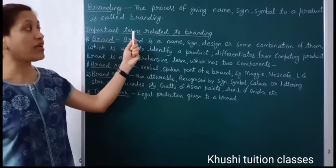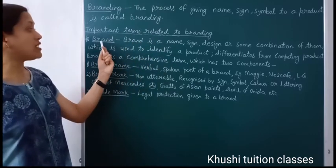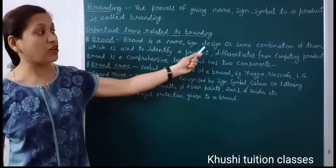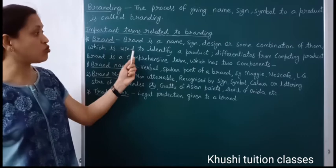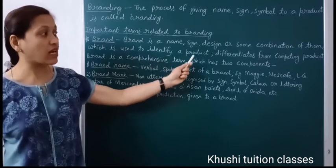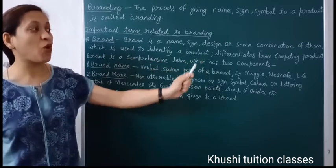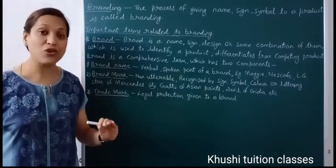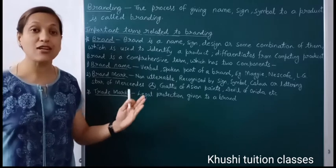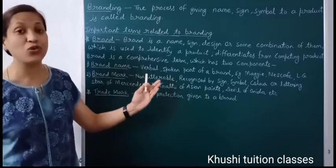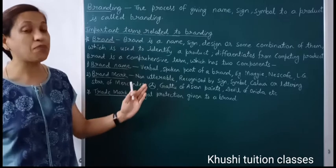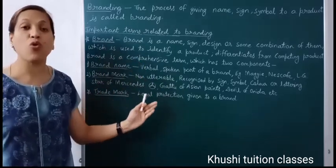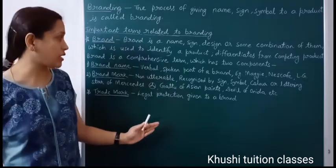Now there are important terms related to branding. The first is brand. Brand is a name, sign, design, or some combination of them which is used to identify a product and differentiate it from competing products. A brand name may include a name, sign, special letters, font, design, or picture — the combination of all these is called a brand, which distinguishes your product from competitors' products.